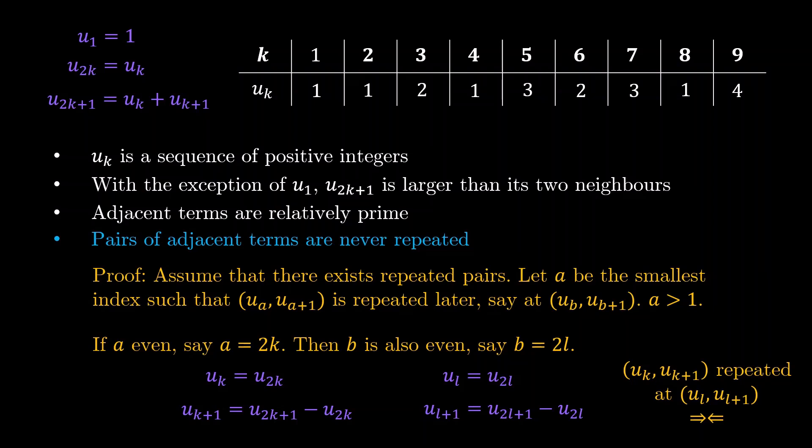Same thing if a is odd, we'll leave it to the viewer to prove it, but a very similar proof applies. Now what does this fourth statement tell us? It tells us that when we take the ratio of successive terms, we'll always end up with different rational numbers. So we have an injective function, so to speak, from pairs of successive terms into the rational numbers.